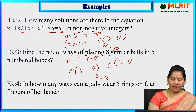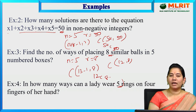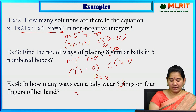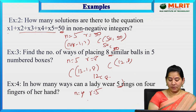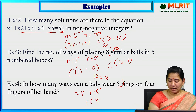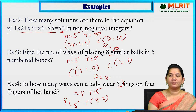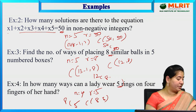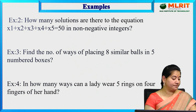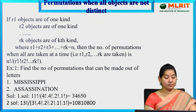Next: in how many ways can a lady wear 5 rings on 4 fingers of her hand? Here the 4 fingers give n equal to 4 and rings give r equal to 5. So C(4+5-1, 5) = C(8, 5) = 8C5 is the answer.